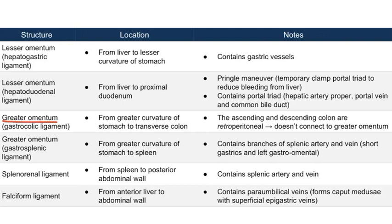Going back to the table, the greater omentum has two components: the gastrocolic ligament and the gastrosplenic ligament. Gastrocolic goes from stomach to colon, specifically the transverse colon. Gastrosplenic goes from stomach to spleen. Focusing on the gastrocolic ligament, it connects to the transverse colon only, not the ascending and descending colon. This is a helpful reminder that the ascending colon and descending colon are retroperitoneal, and therefore wouldn't connect to the greater omentum, whereas the transverse colon is intraperitoneal and accessible.